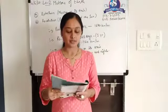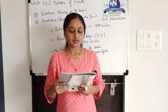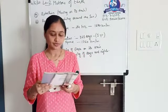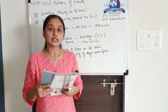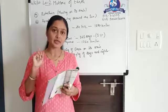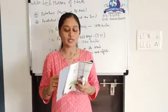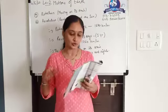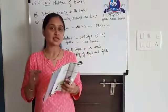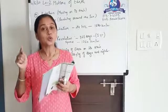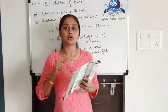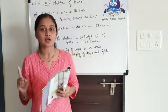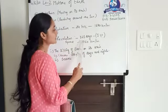Page number 9, topic: revolution. Earth takes 365 days to complete one revolution around the sun. This period is called a year. Earth takes 365 days for one revolution around the sun. This period is called 1 year. Earth revolves around the sun at a speed of 1760 km per hour.